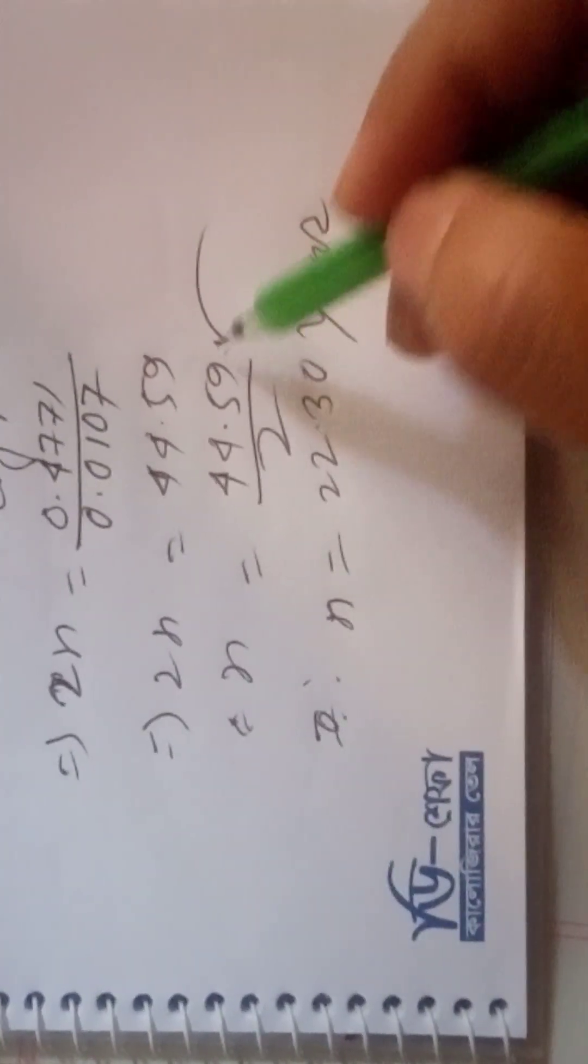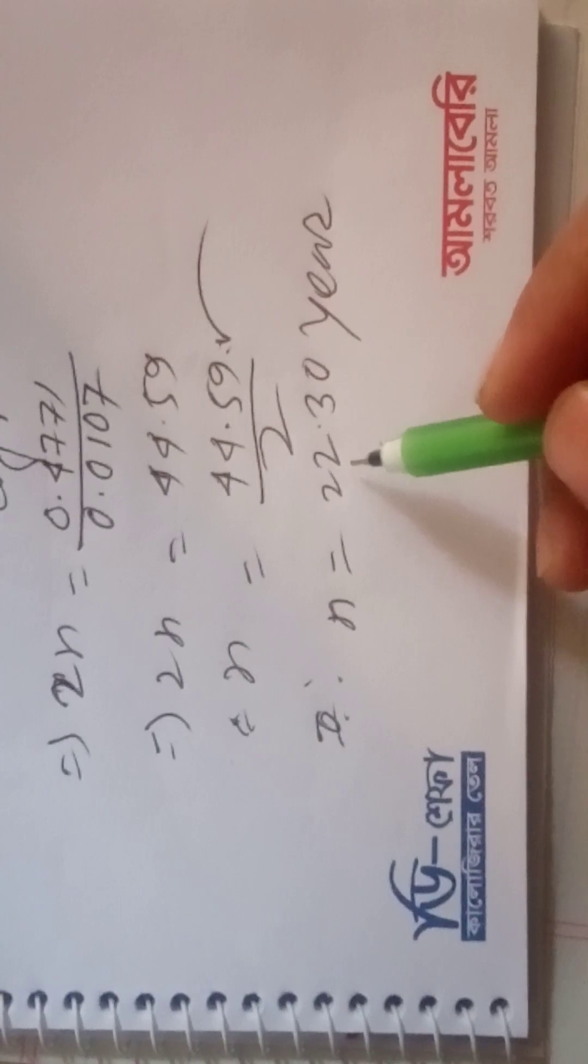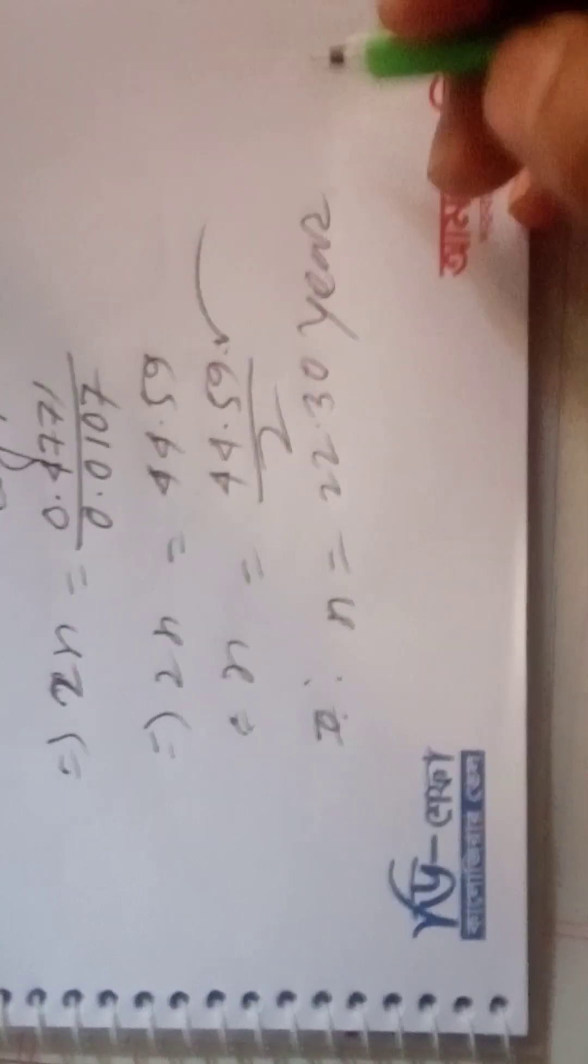It will be needed to make money three times 22.3 years.